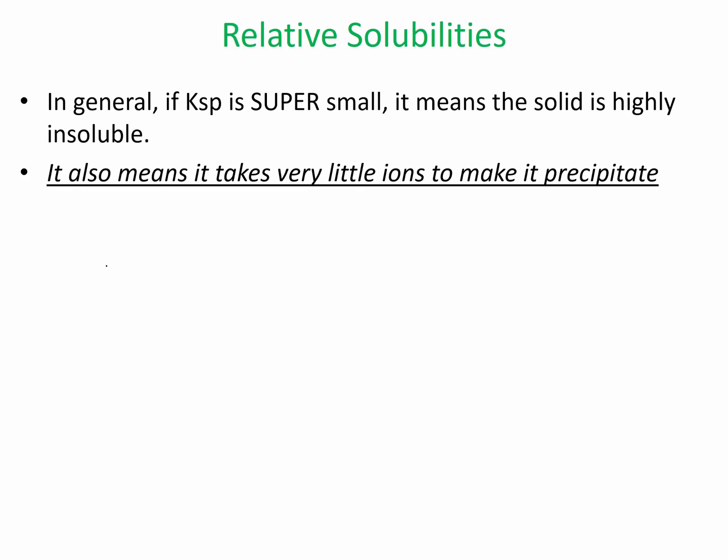So if we have a comparison, if we compare like barium hydroxide, and the Ksp for this is 5 times 10 to the negative 3rd, that means that if you have our solid, barium hydroxide here.